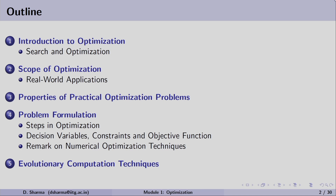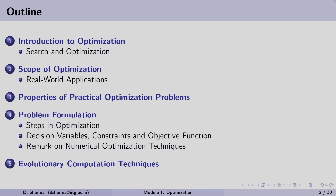We will then move to the properties of practical optimization problems. Since there are different characteristics or properties available, looking at those properties we generally decide what kind of algorithm to use. We will go through all those properties one by one. Thereafter, we will discuss problem formulation — the generalized formulation, mathematical equations, how to find the variables, constraints, types of constraints, objective functions, and variable bounds. Finally, we will give some remarks on numerical optimization techniques and move forward to evolutionary computation techniques.